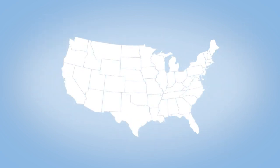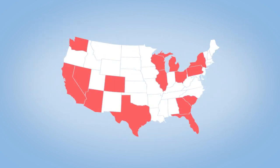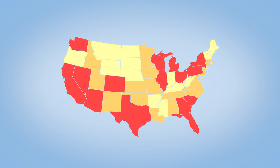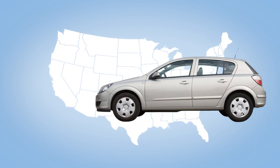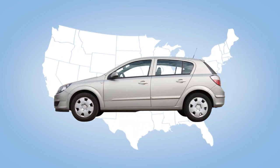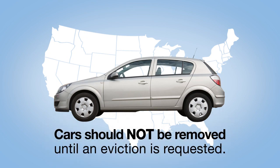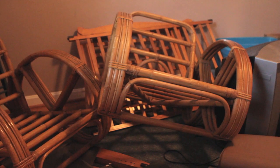Certain states are considered to be eviction states, which means no personal property can be removed from the location until an eviction occurs. Cars are often included in the definition of personal property in these states and should not be removed until an eviction is requested.